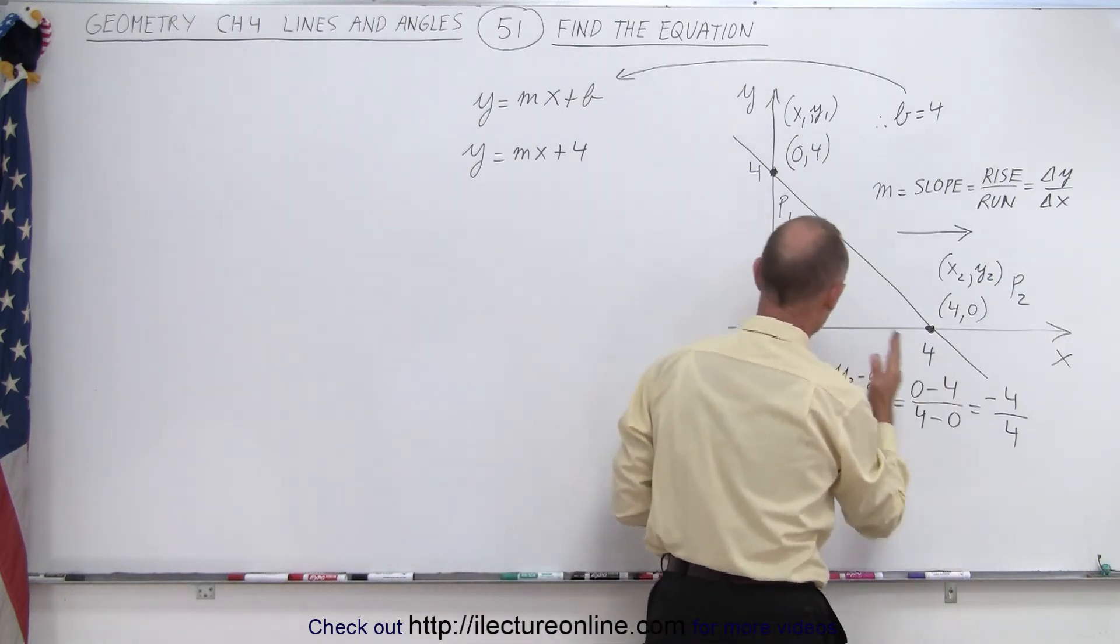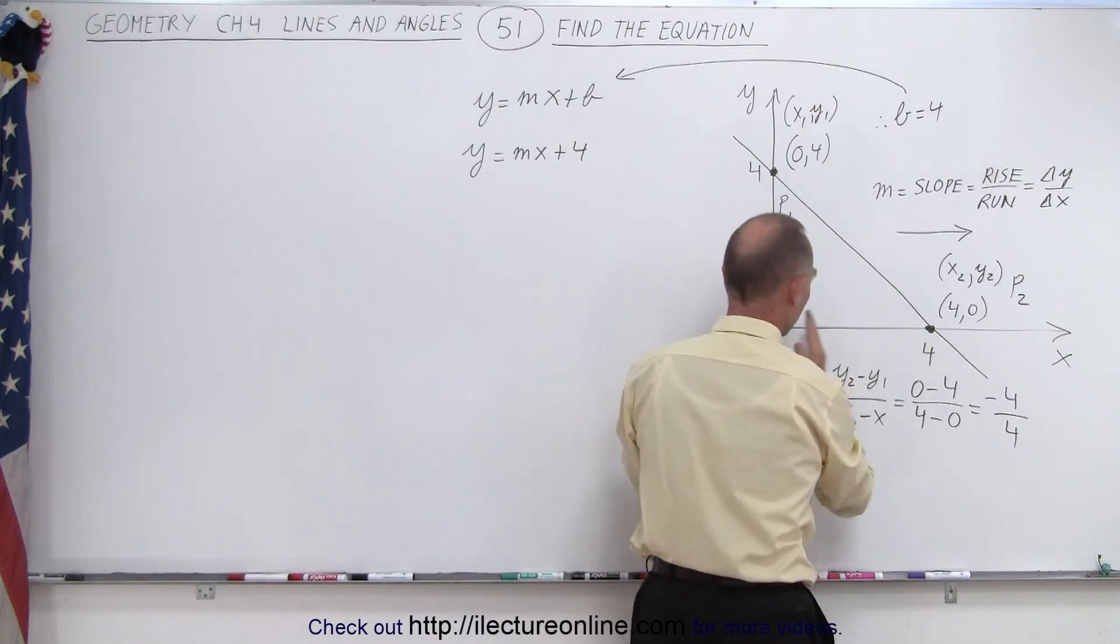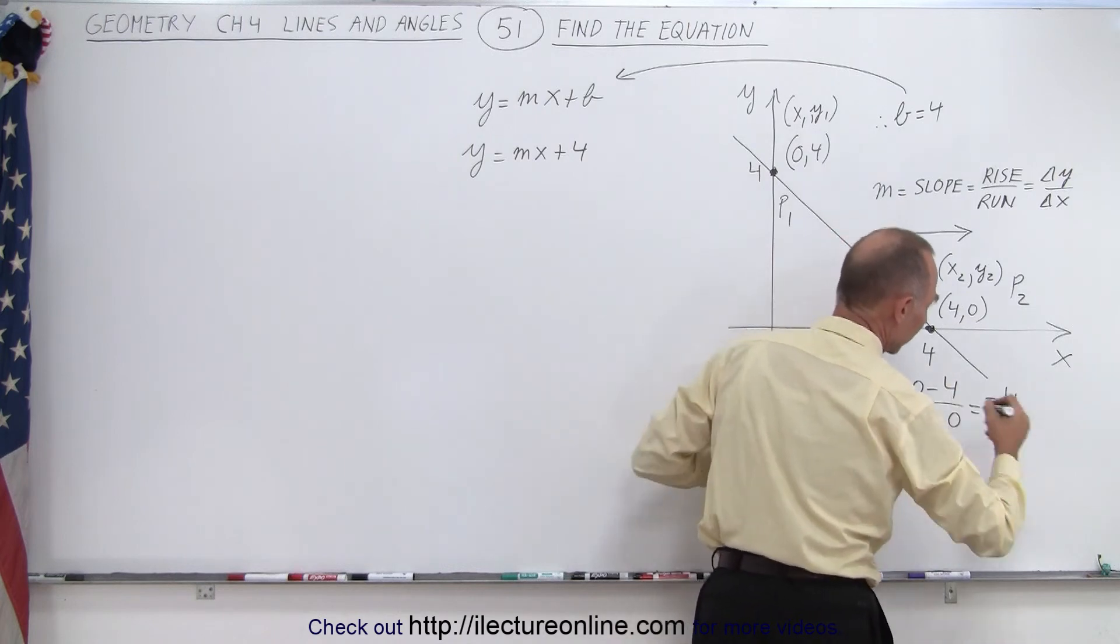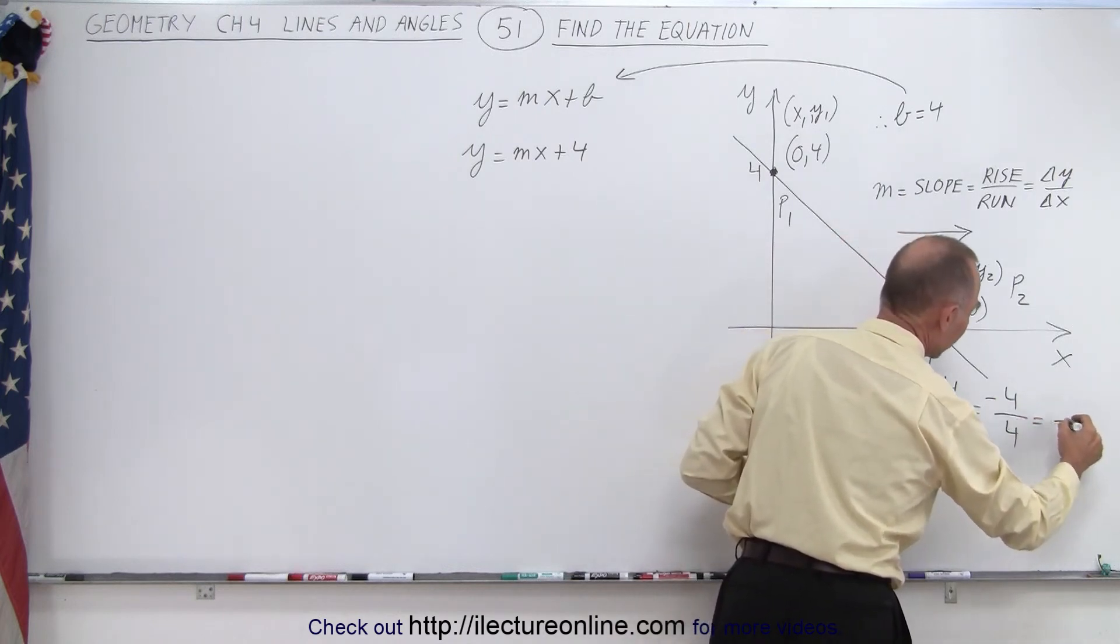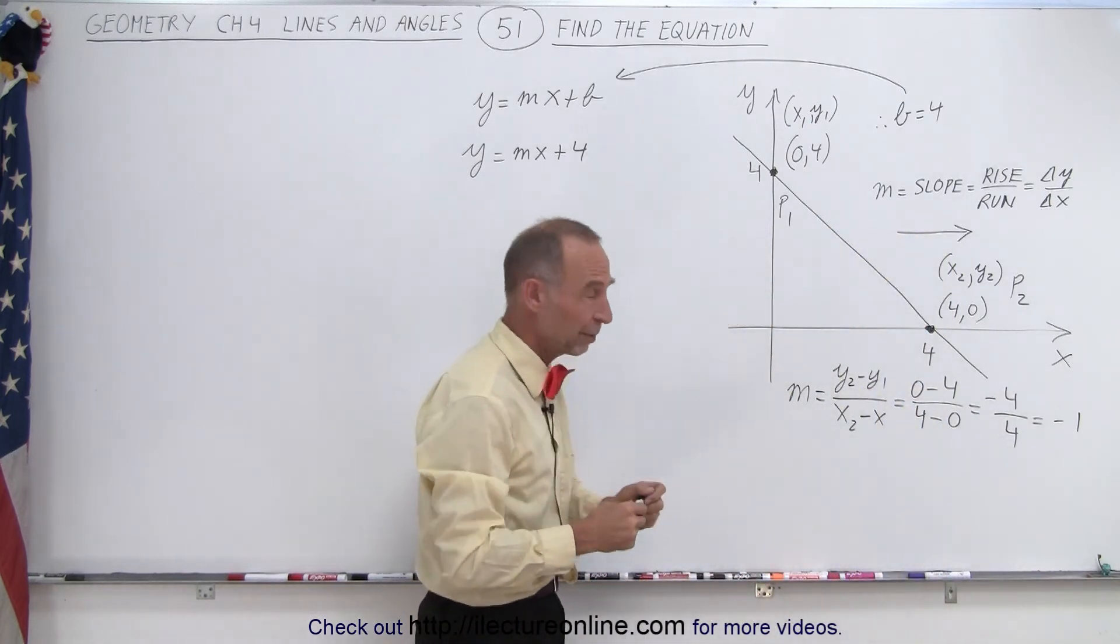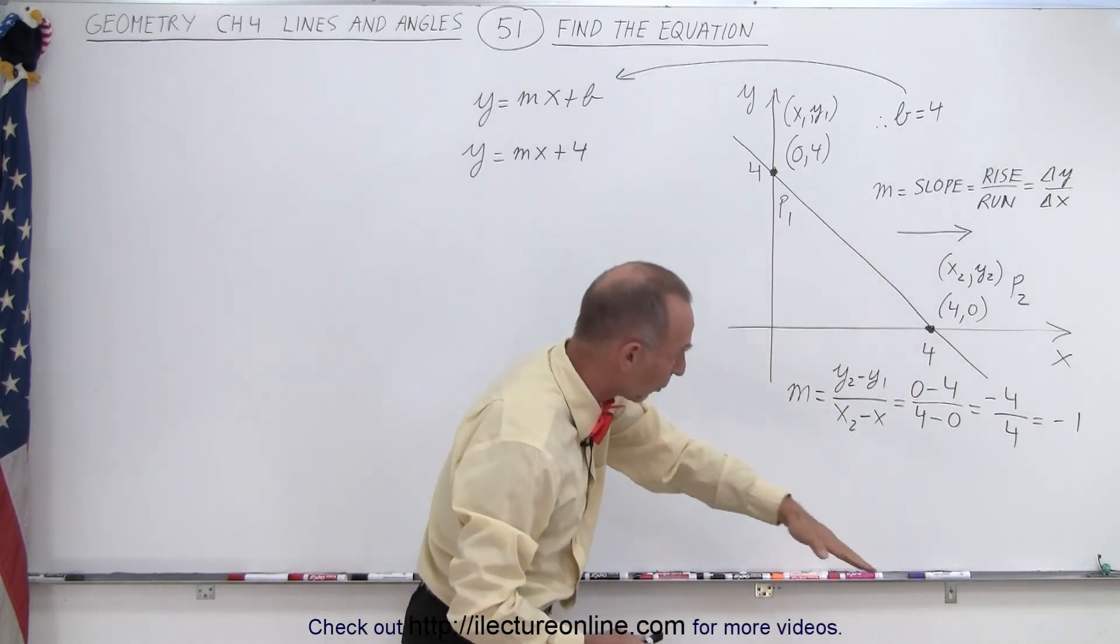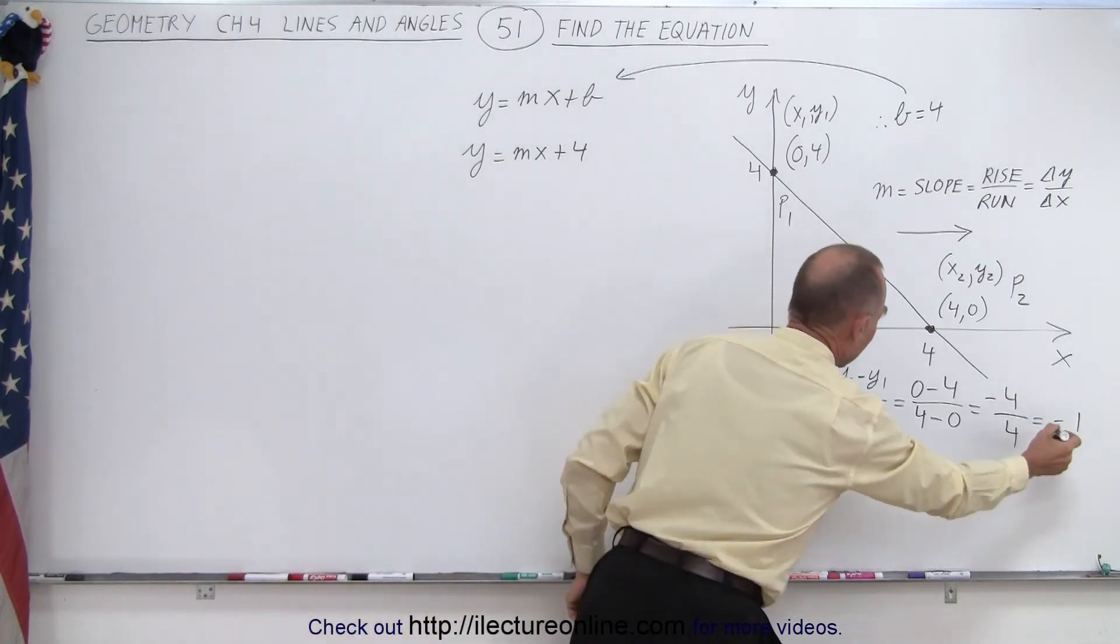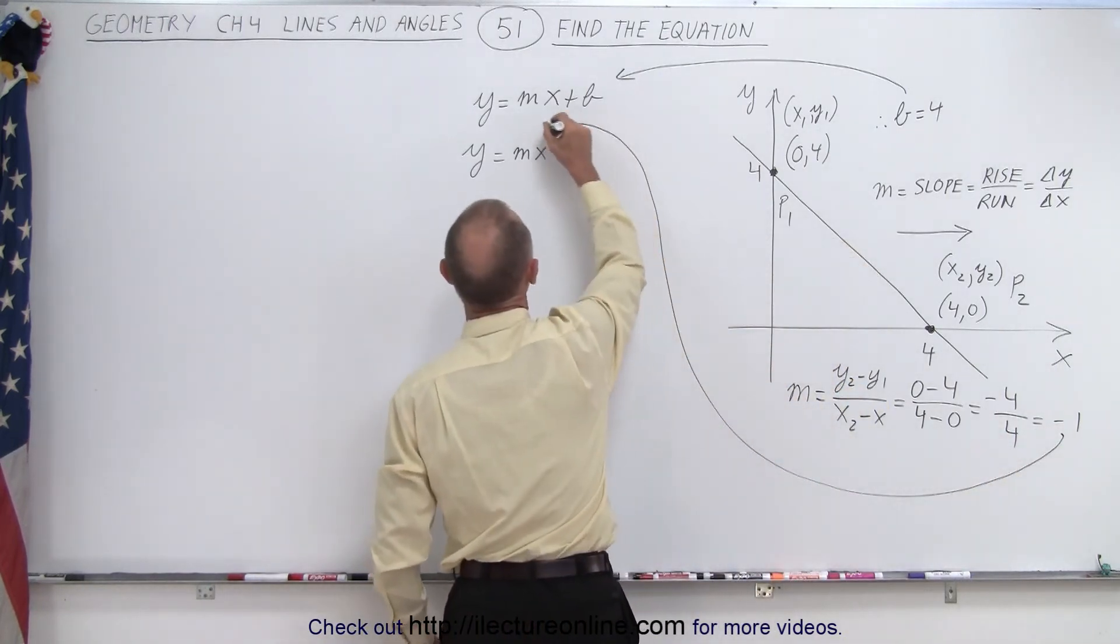And notice the run is from here to here, which is a run of 4. So negative drop of 4 and a run of 4, well that gives us negative 4 over 4, that's equal to negative 1. So this becomes a slope. A negative slope simply means that the line goes down to the right instead of up to the right. And so now we can go ahead and take that result and plug it in here.